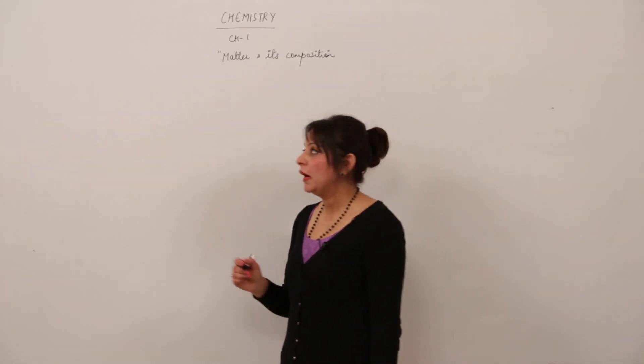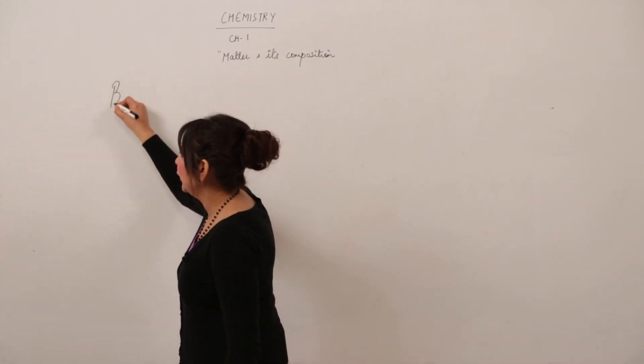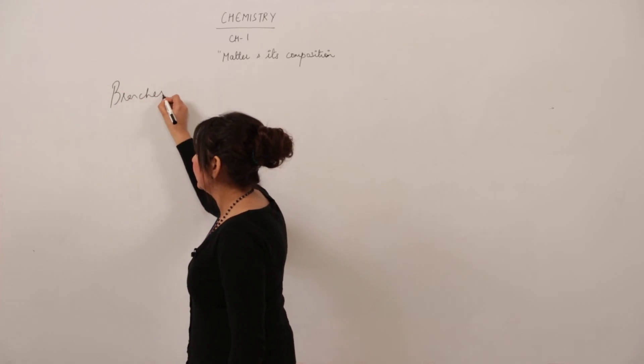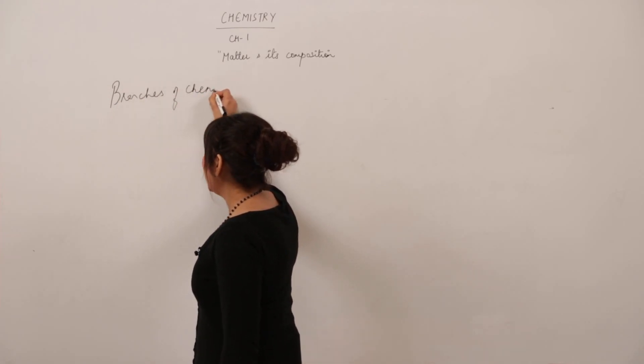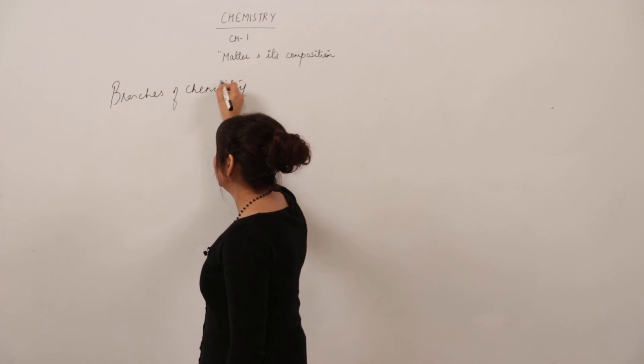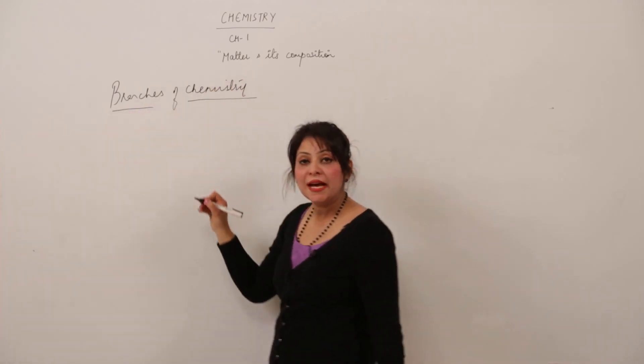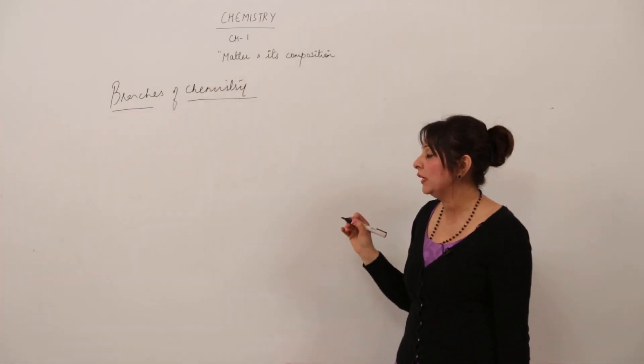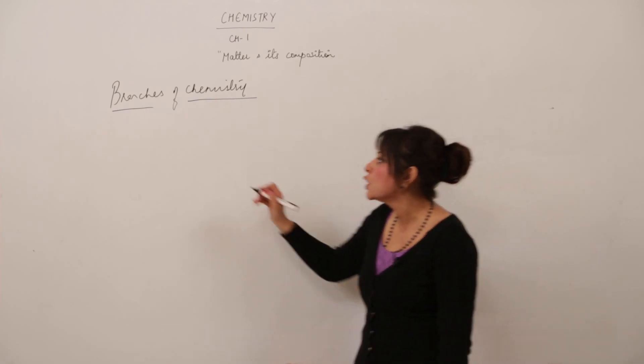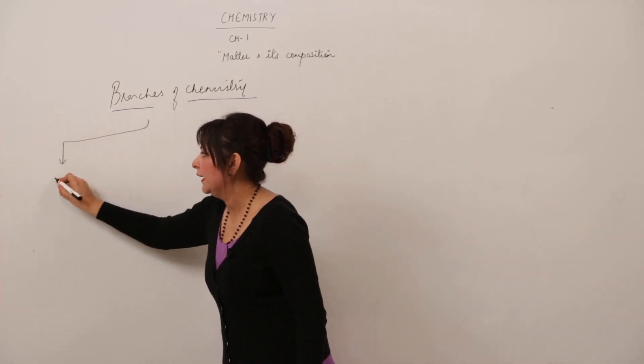Now we are going to study about branches of chemistry. Chemistry has many branches, it is not a single branch. It has many branches so that it can cover all areas.